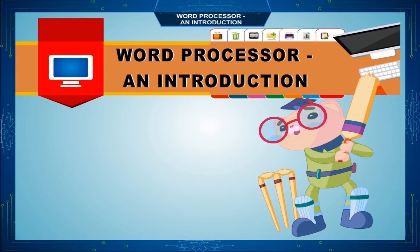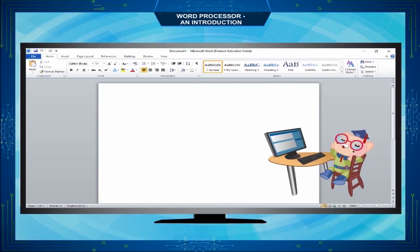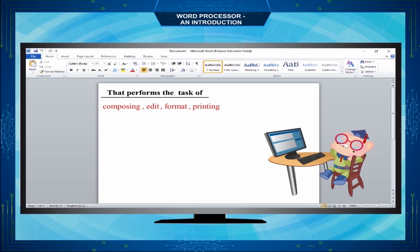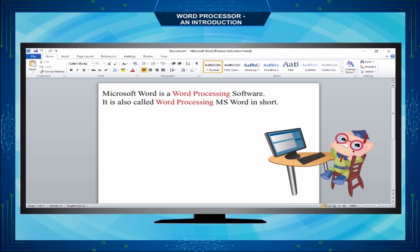A Word Processor is a computer software application that performs the task of composing, editing, formatting, and printing of documents. Microsoft Word is a word processing software.